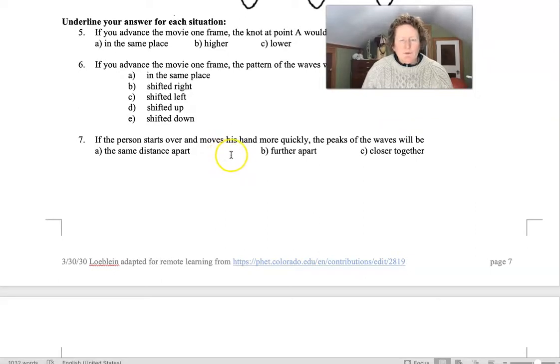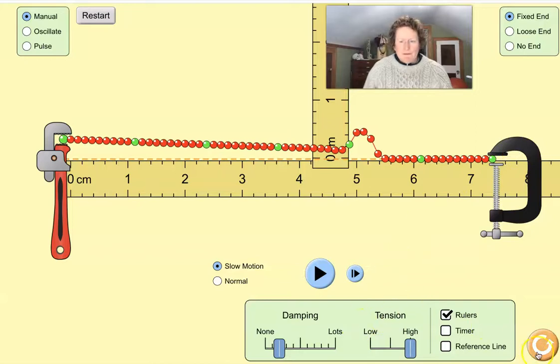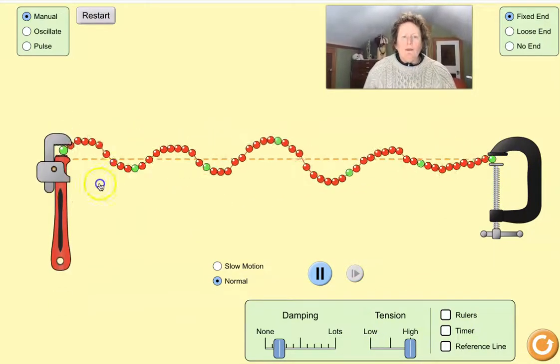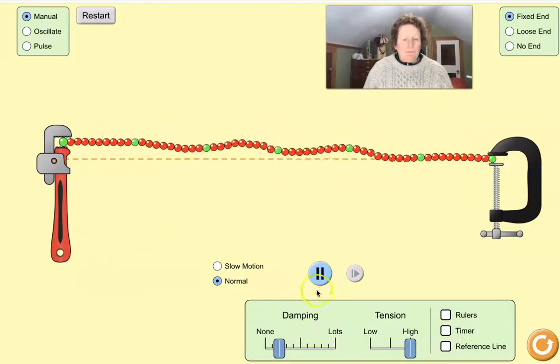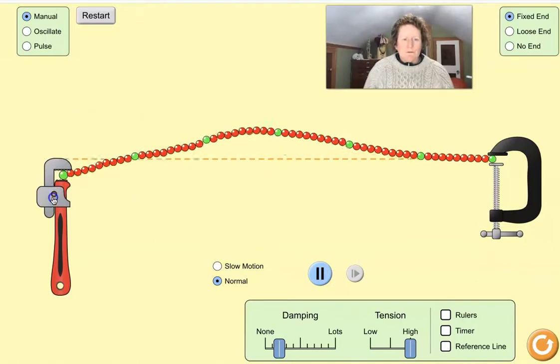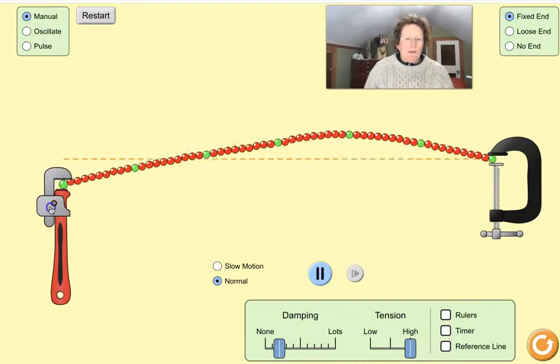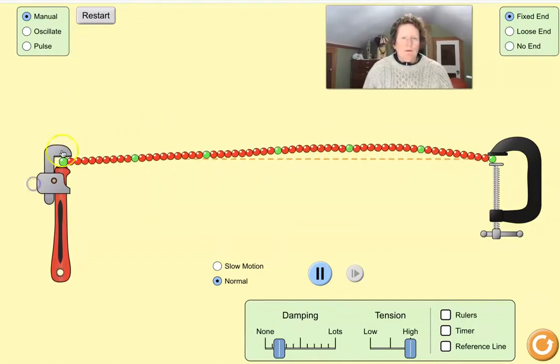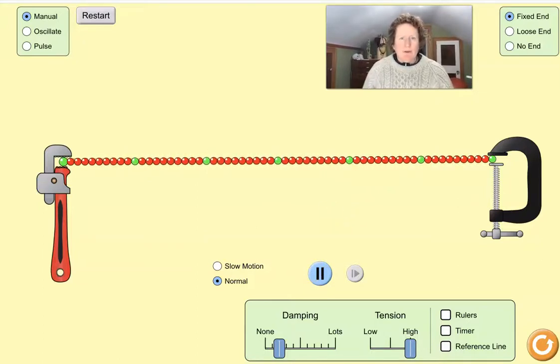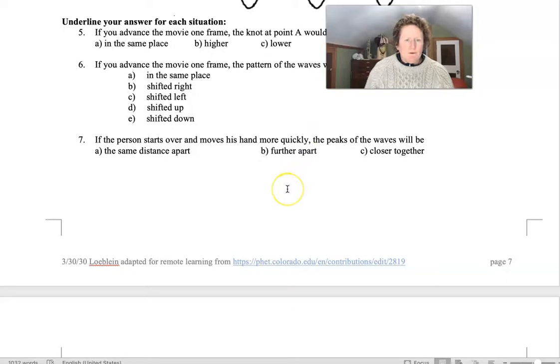If the person starts over and moves his hand more quickly, the peaks of the waves will be... Well, let's reset here. There's quickly. There's slowly. And you can look at the different wavelengths there by using slow motion and the pause button. You can do that on your own.